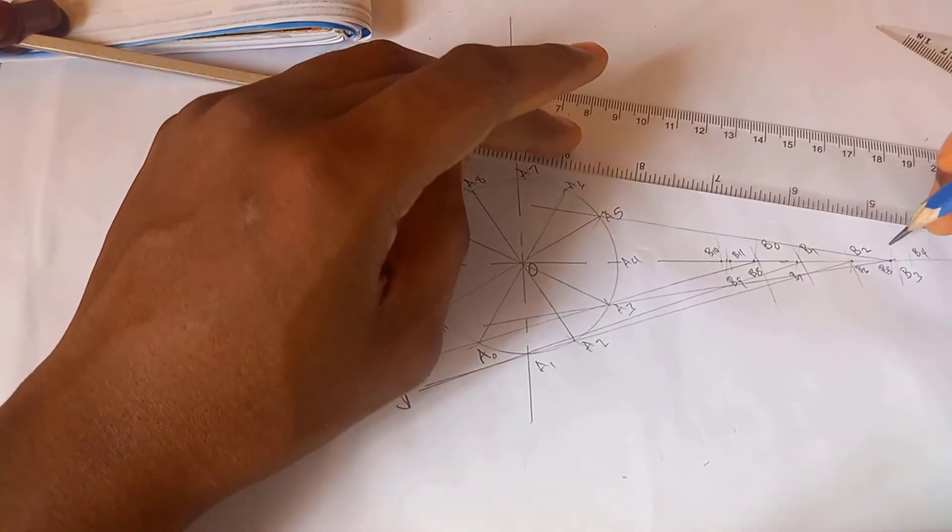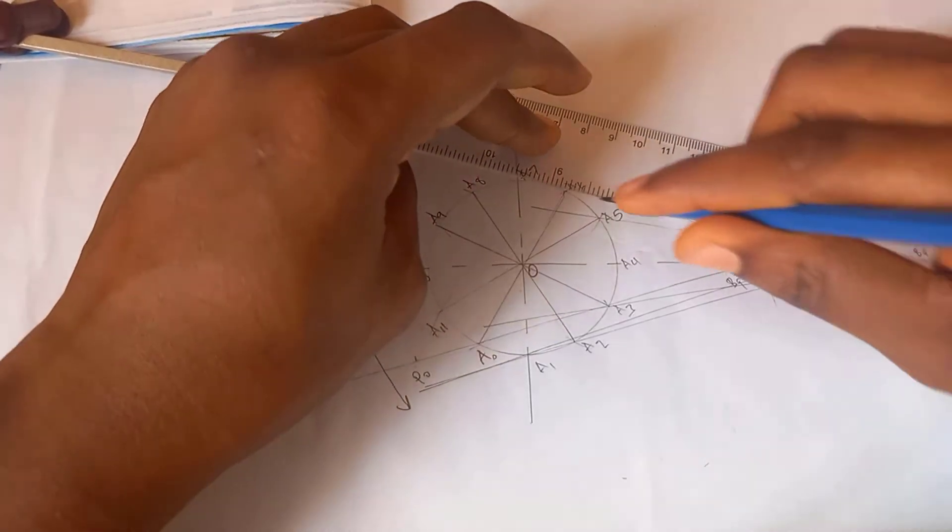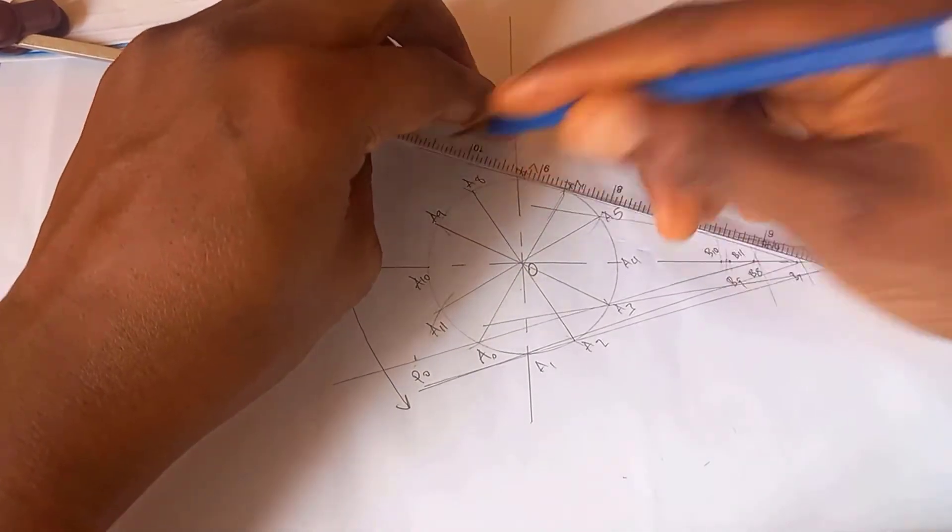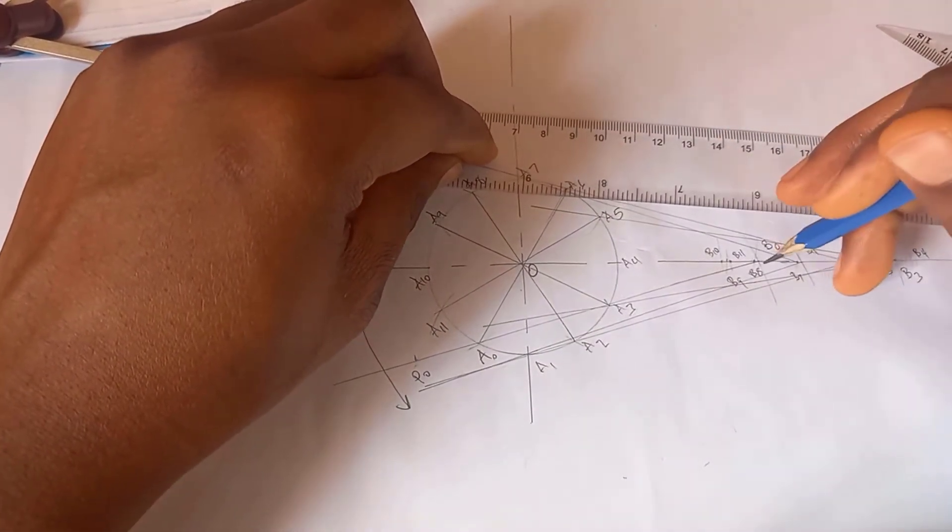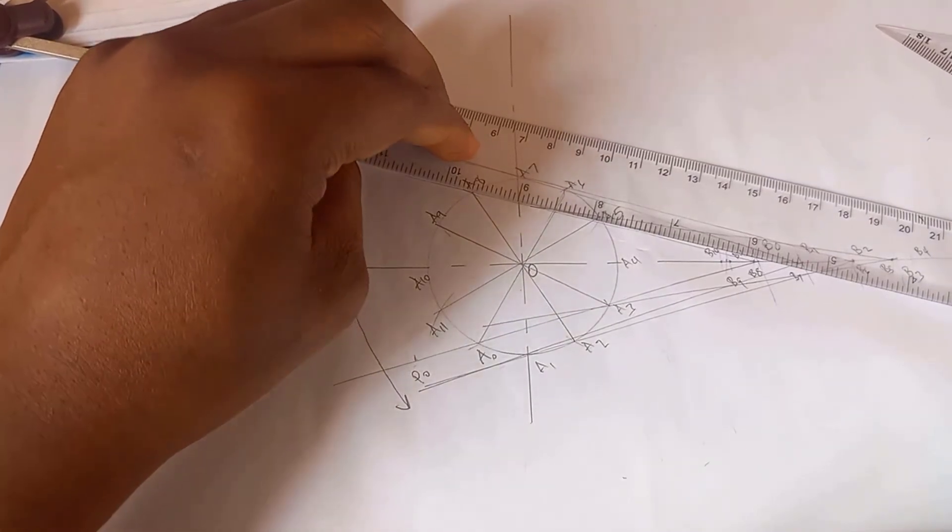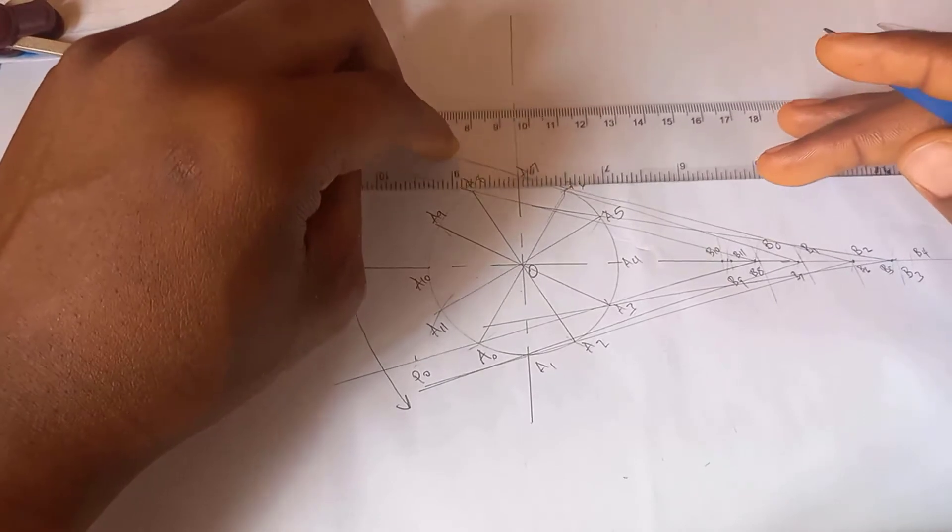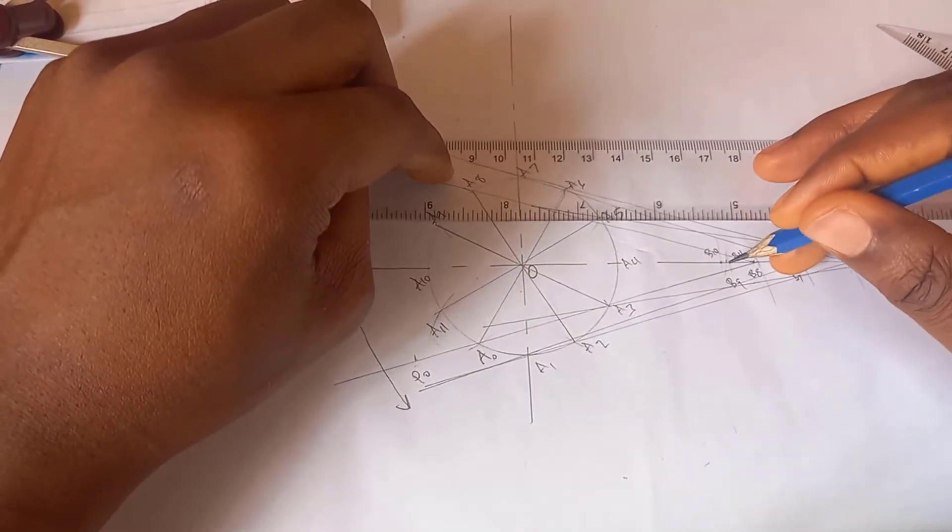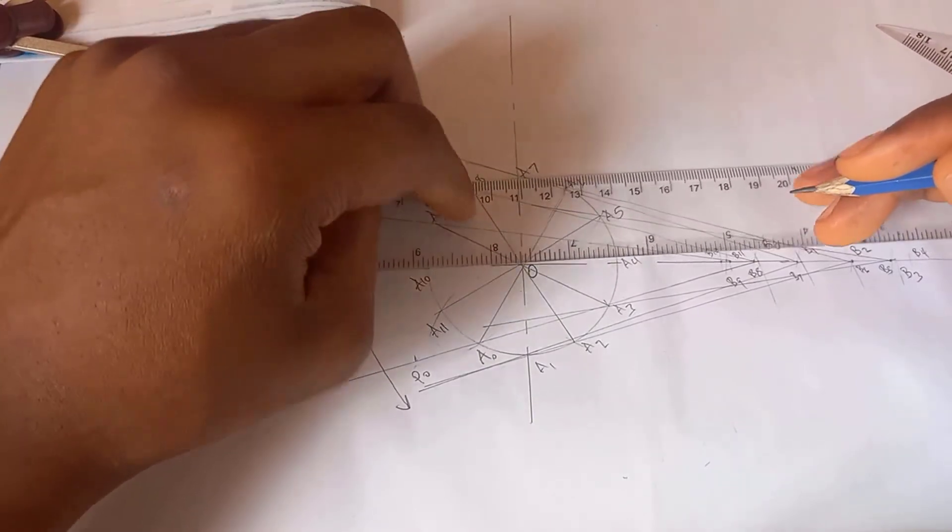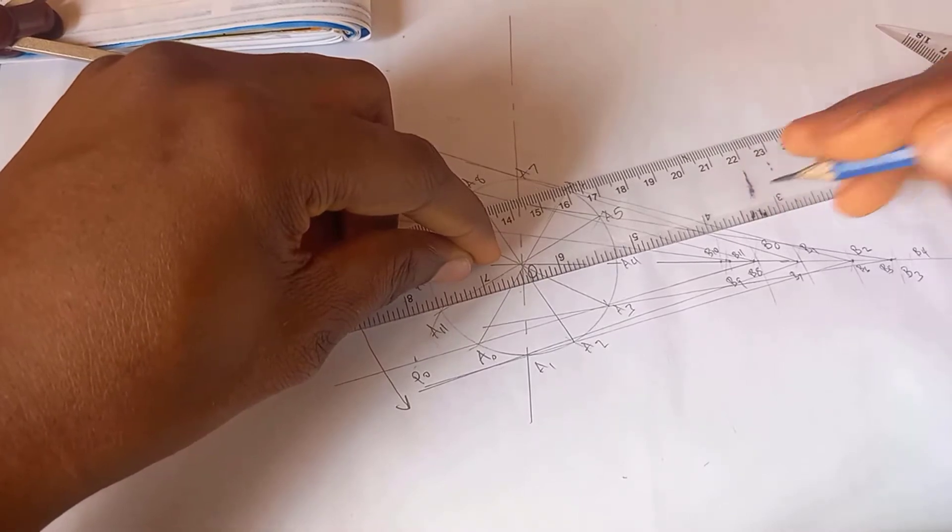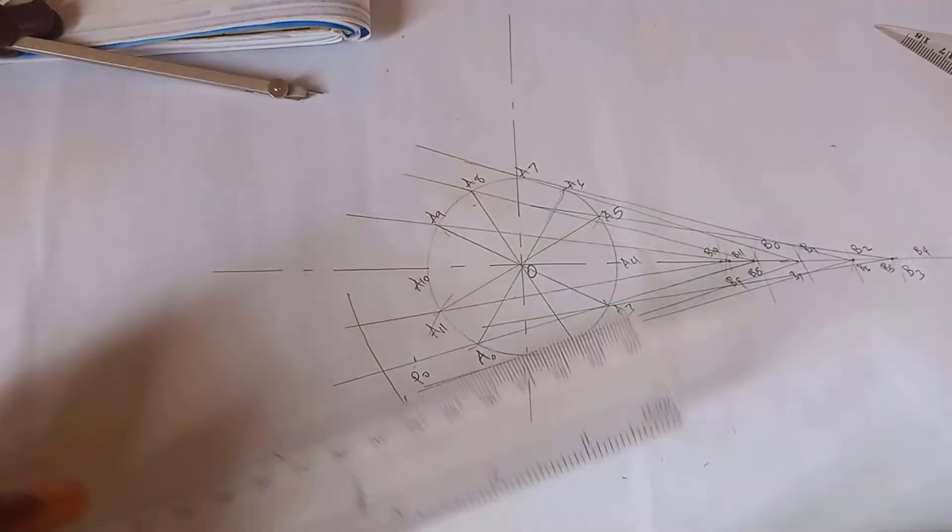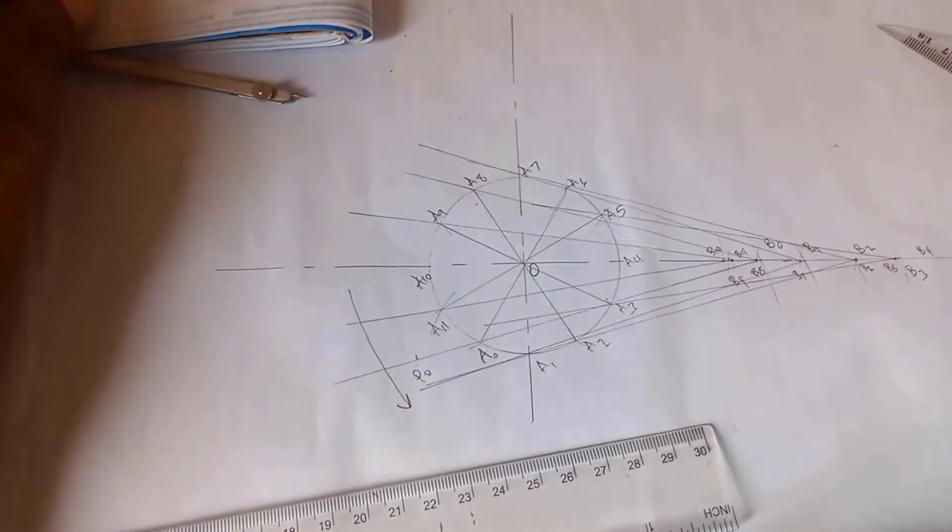A6 to B6. A7 to B7. A8 to B8. A9 to B9. A10 to B10. A11 to B11. Alright, so with that being done...